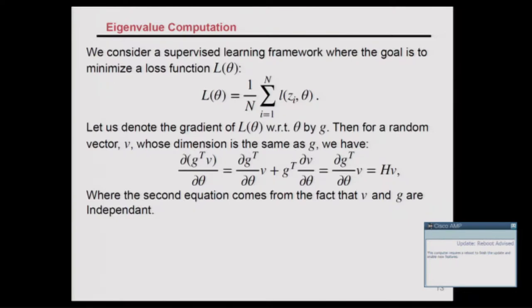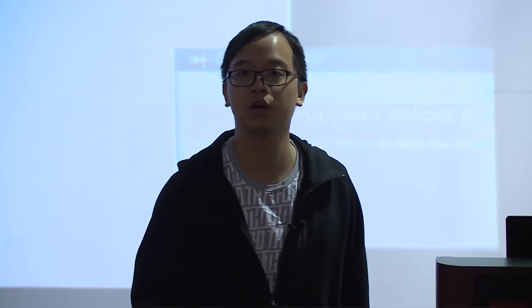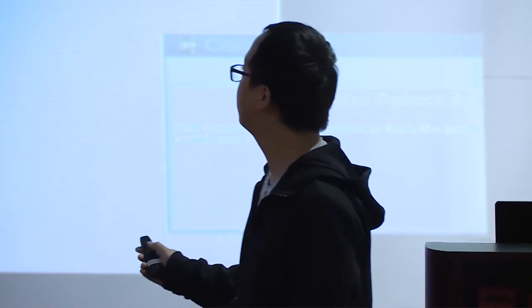There is a method called the Hessian-free method. If you take the gradient of your loss with respect to theta, and for a random vector V compute the dot product to get a scalar, then compute the gradient of that scalar with respect to theta — since V is independent of theta, you drop the second term and get a Hessian-vector product. This allows you to compute things like the top eigenvalue using stochastic Lanczos or other methods.